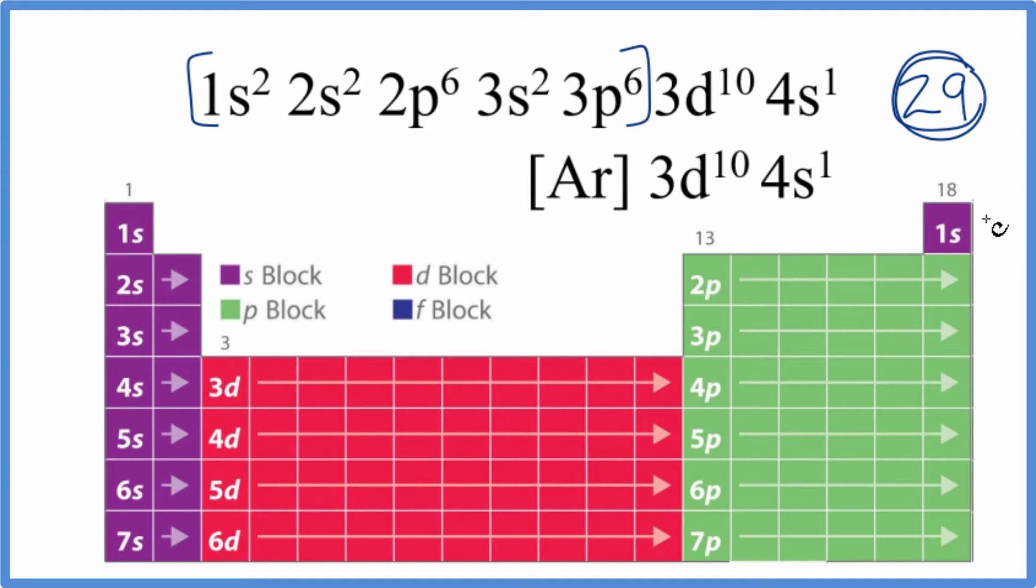We go 1s¹, 1s², s is full with 2, 2s², then 2p 1, 2, 3, 4, 5, 6, p is full with 6, 3s², 3p⁶. Here's the 4s², and we would expect that we could just count up to 10, 3d¹⁰.